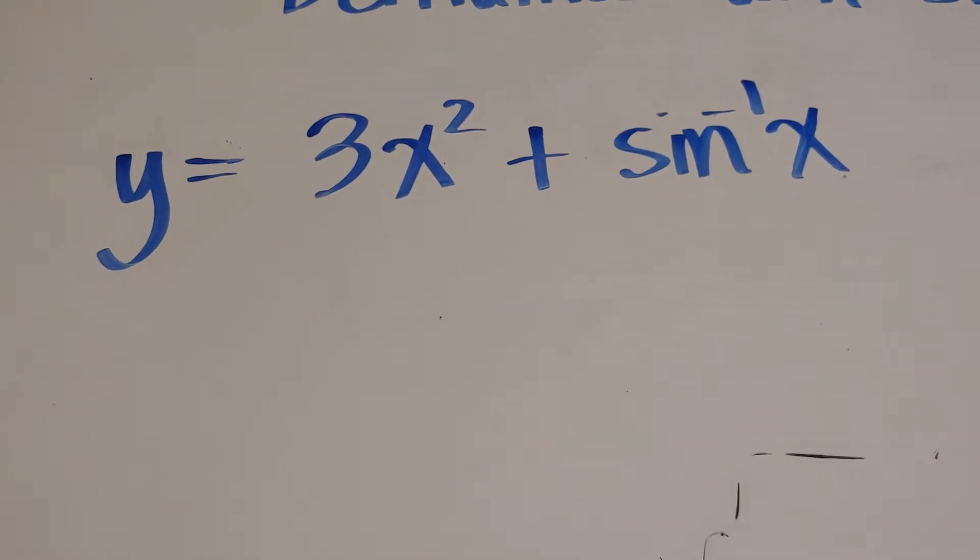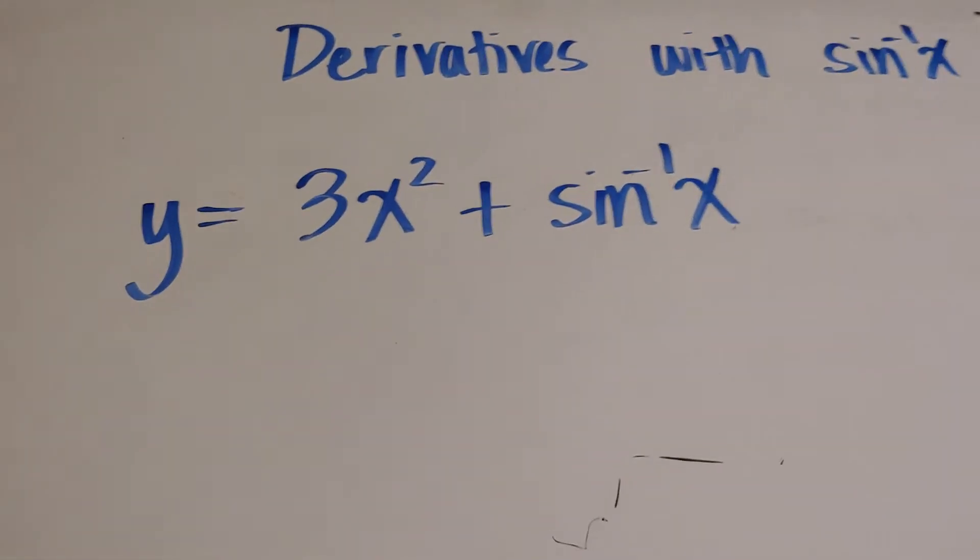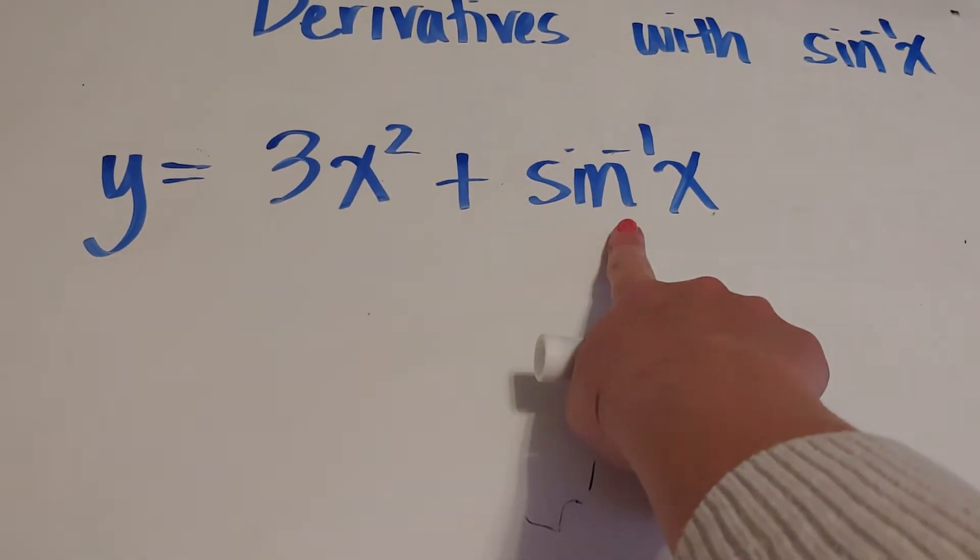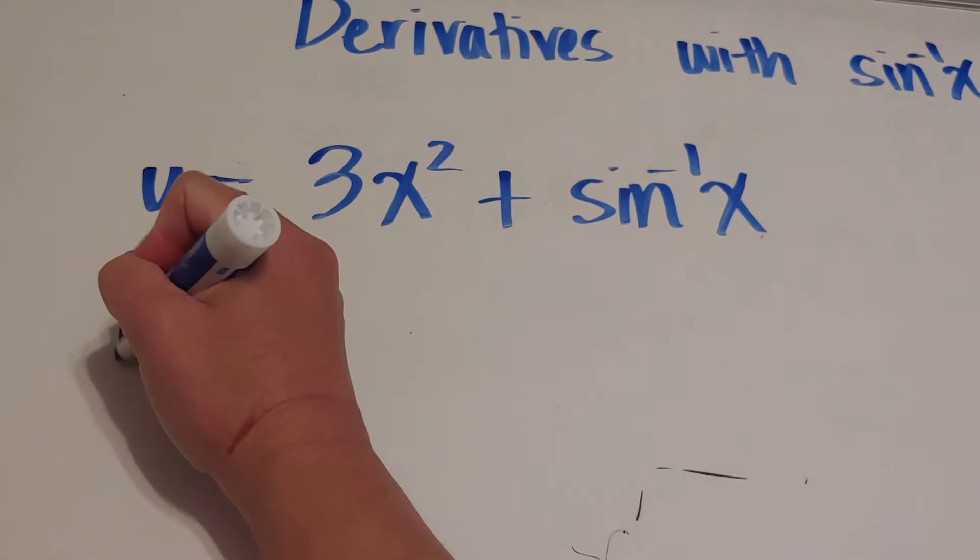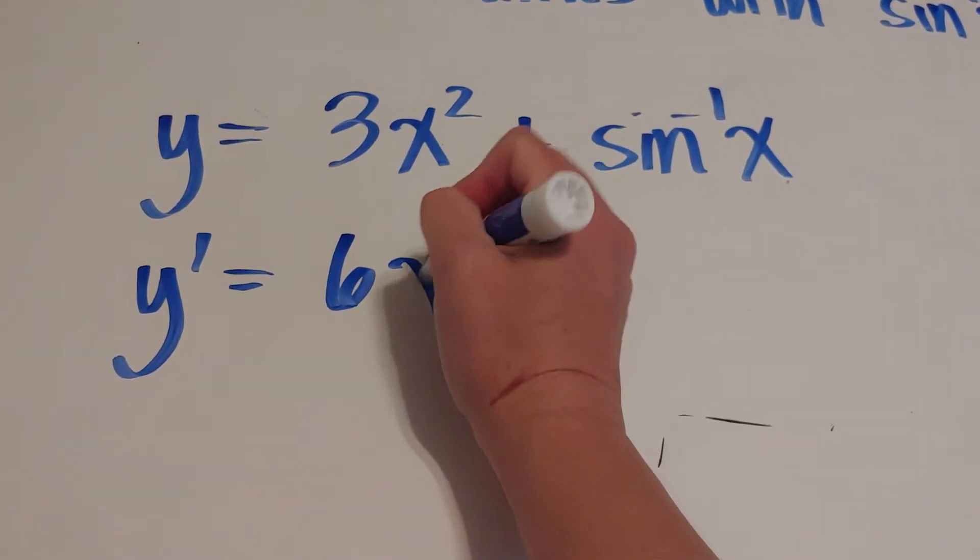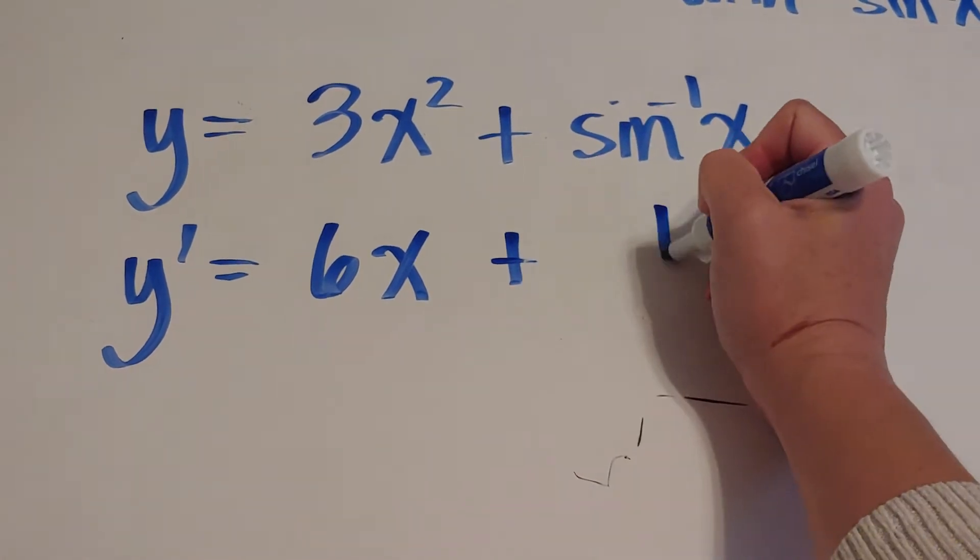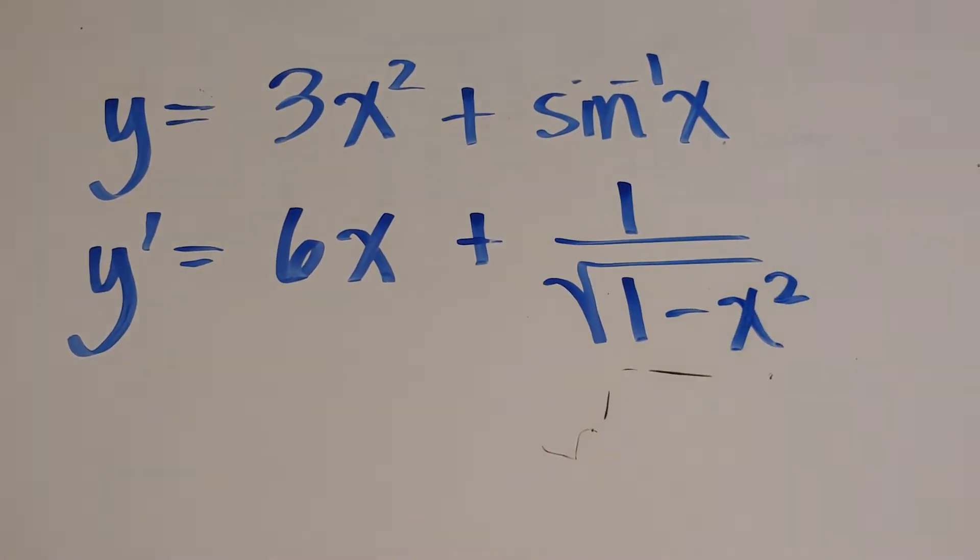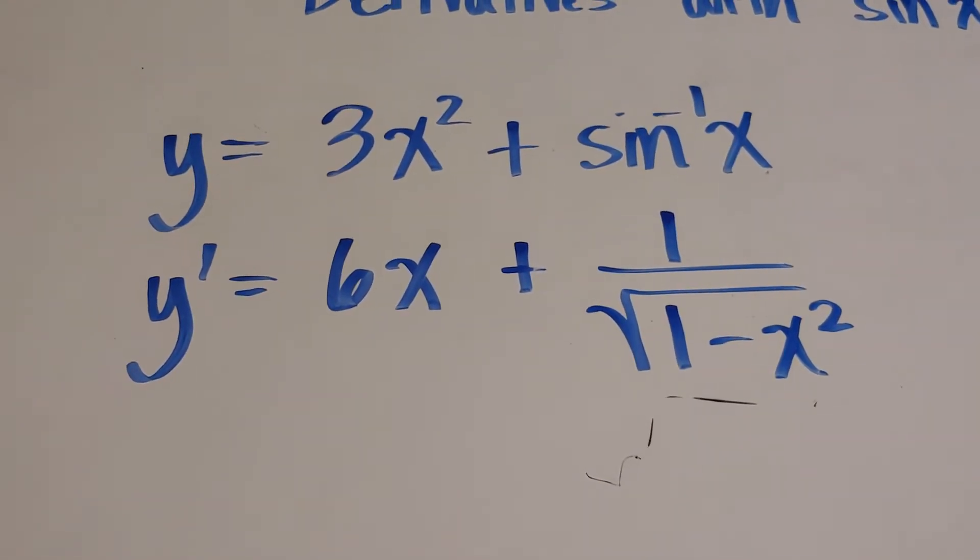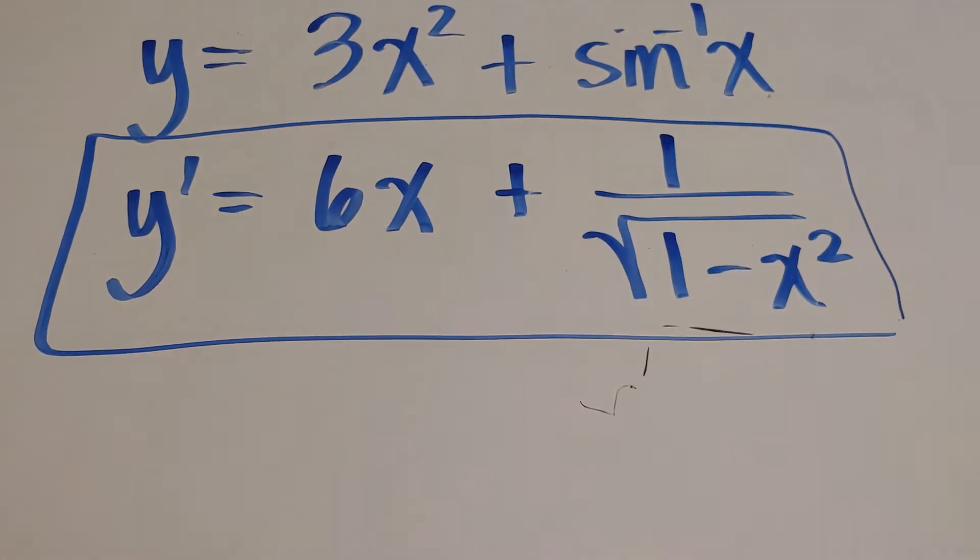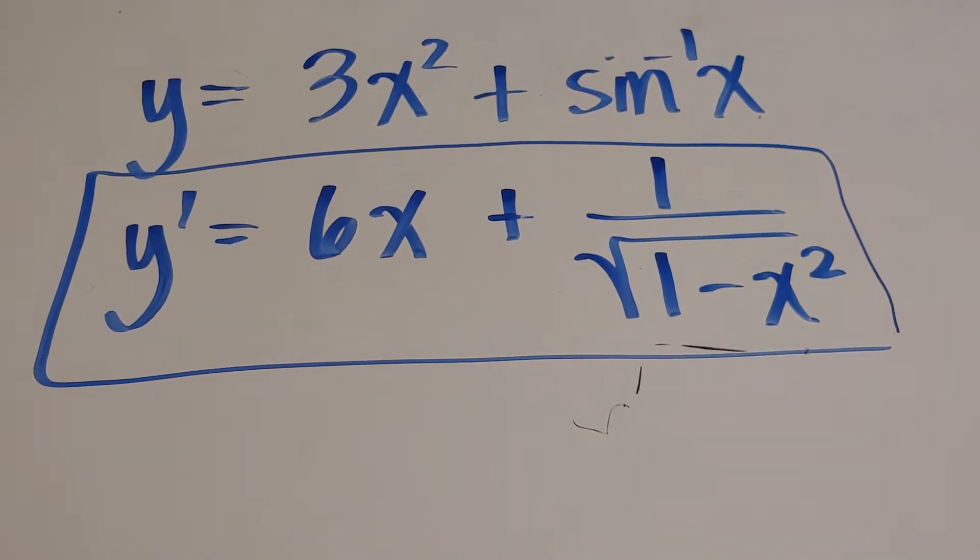Easy enough? Okay, so I take the derivative of 3x squared. This is addition, so I just take the derivative of this piece and this piece. Here, I'm going to write y prime equals 6x plus 1 over the square root of 1 minus x squared. Ta-da! That's it. Do not make a common denominator. This looks fantastic. Pretty fast.